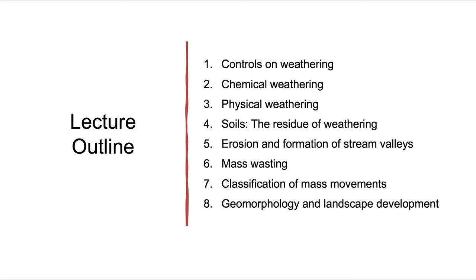In this lecture, we'll talk about a number of different aspects of landscape development, including controls on weathering, chemical weathering, physical weathering, soils — the result of this weathering — erosion and the formation of stream valleys, how weathered material is moved away, mass wasting — rapid movement of large amounts of material usually forced by gravity — classification of mass movements, and finally geomorphology and landscape development.